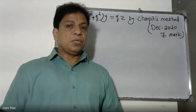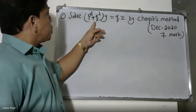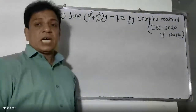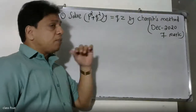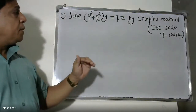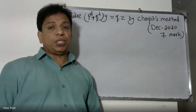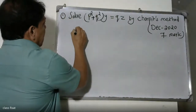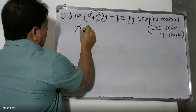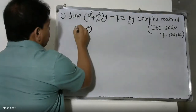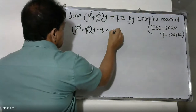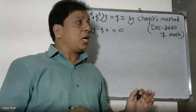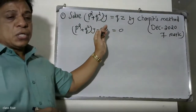Good morning students. We will solve the PDE: p squared plus q squared of y equals q, using Charpit's method. Consider the function F: p squared plus q squared of y minus q equals zero.